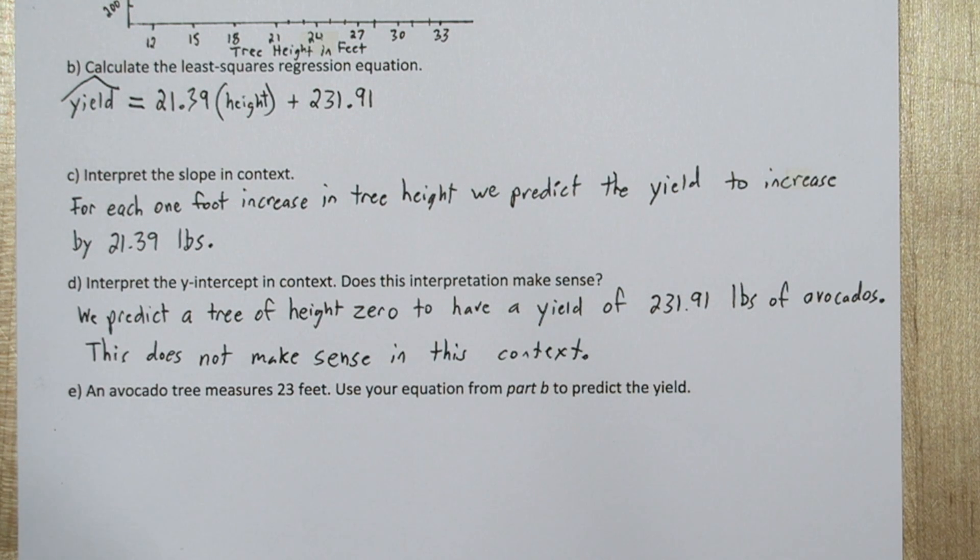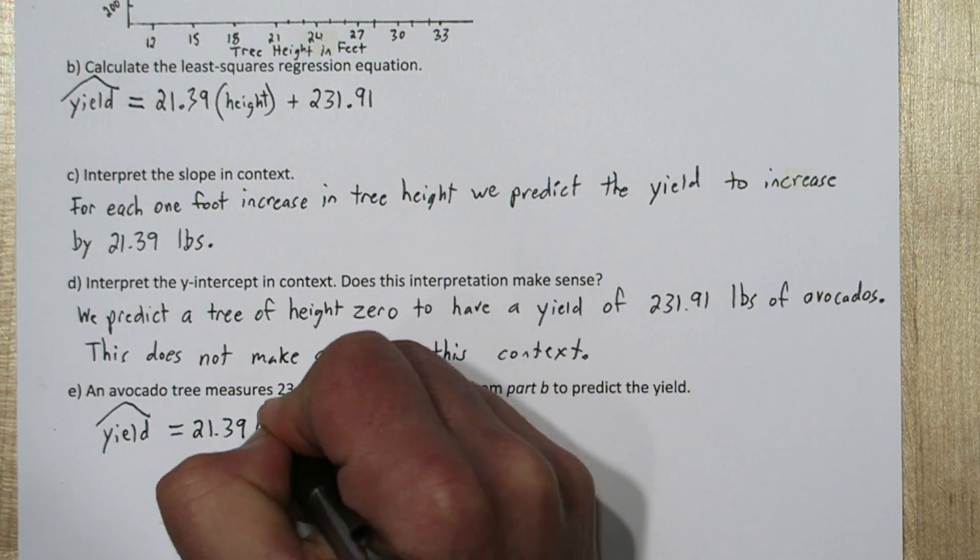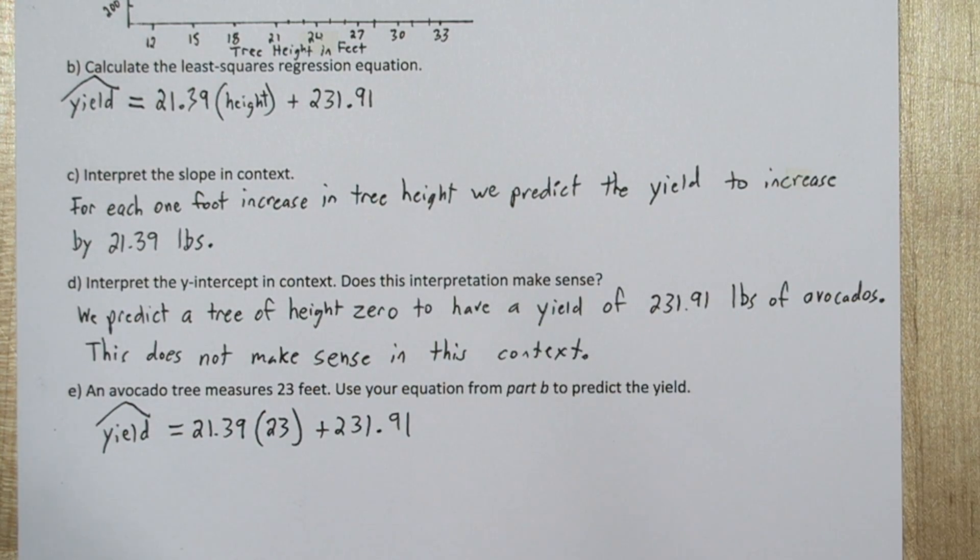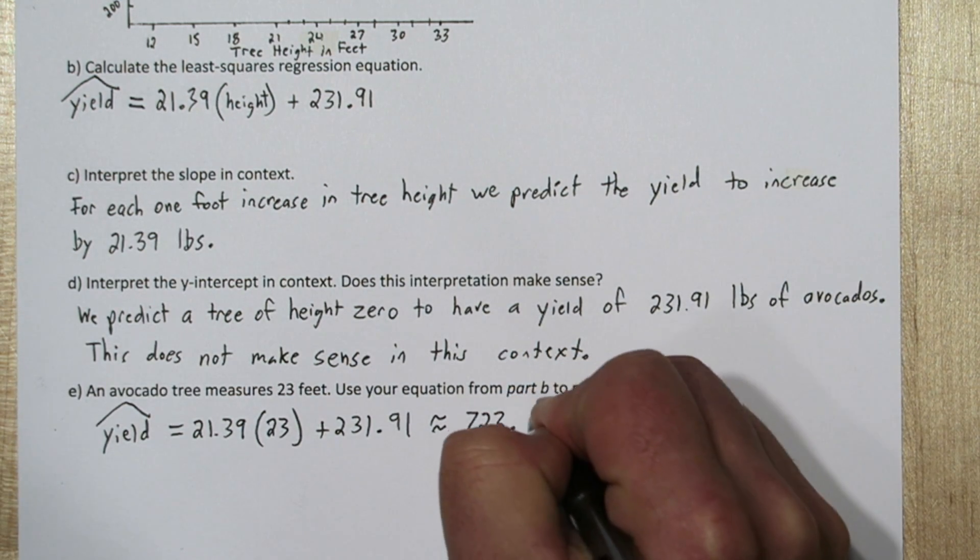Now sometimes the y intercept does make sense, it just depends on what sort of relationship you're describing. Now if an avocado tree measured 23 feet, we can use our equation from part B to predict the yield. Predicted yield equals 21.39 times 23, plus 231.91. That gives us a predicted yield of 723.9 pounds.